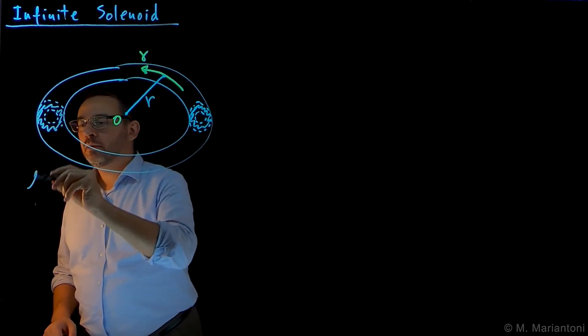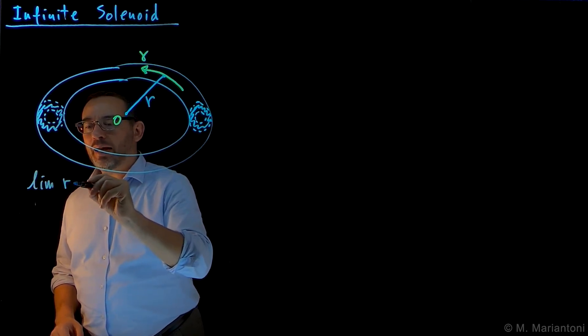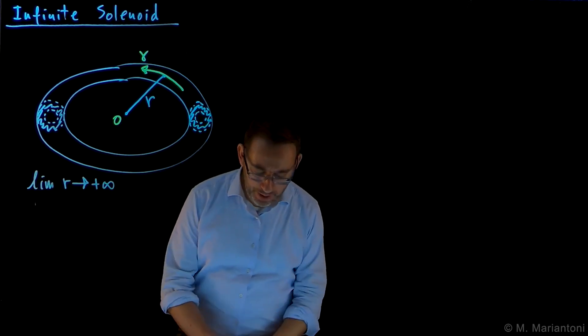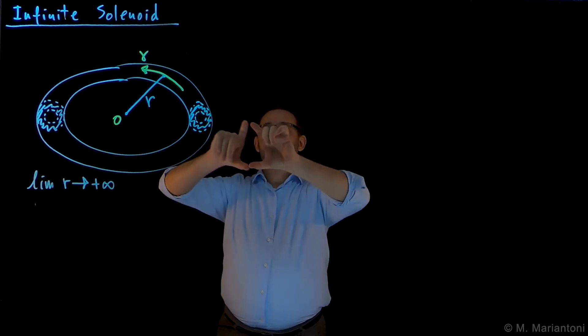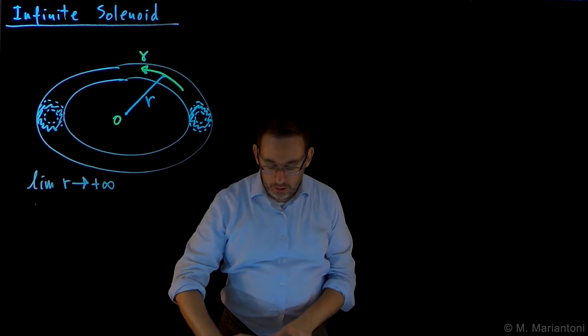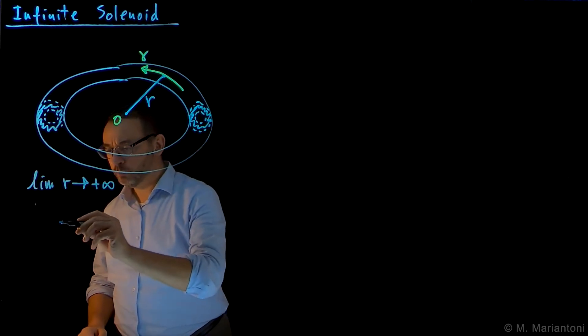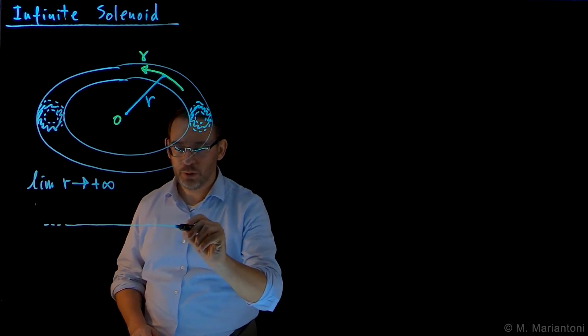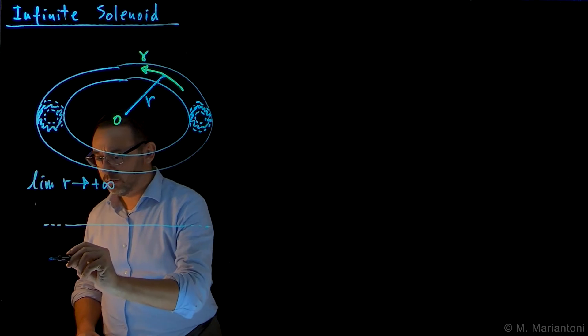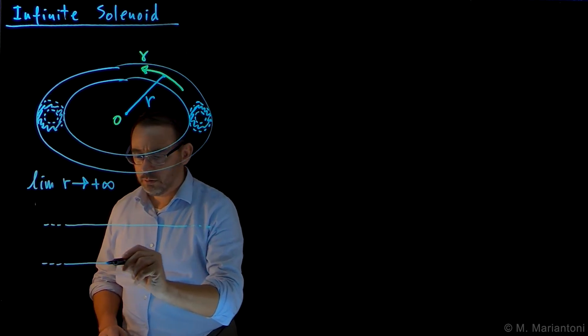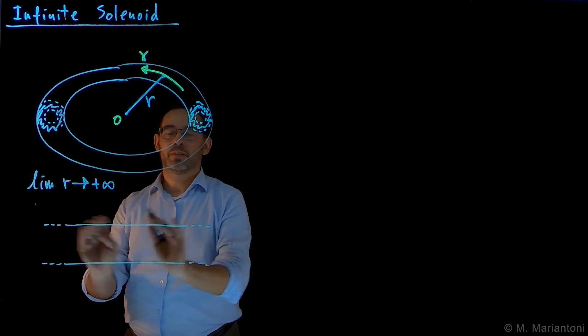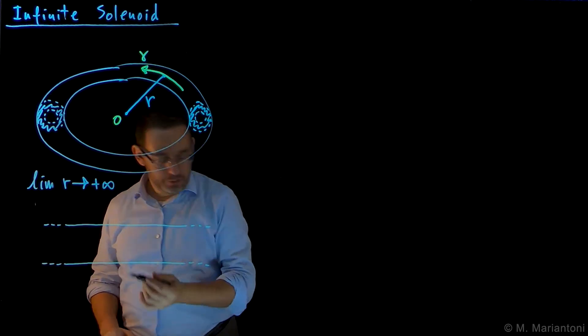In the limit for small r that goes to plus infinity, effectively this bending radius becomes so large that this opens up to be an infinite solenoid of this form. So clearly the bending radius is infinite for a straight line.